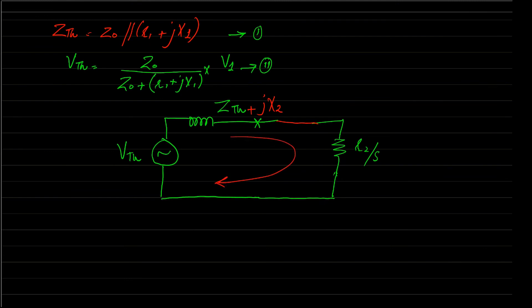So ultimately that will be jX2, and the total current that will be passing through this diagram, that will be I2, the rotor current. Now we have VTh that can be found out by equation number two, and ZTh can be found out by equation number one. Then R2 by S. So this is the simplest diagram.